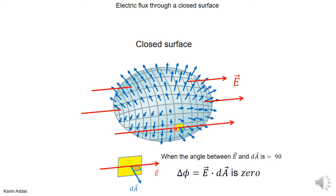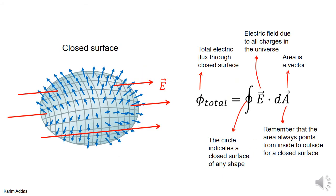If there's an element of area such that the electric field line just basically grazes the surface, then if you zoom in, the electric field and area vectors happen to be at 90 degrees to each other. In that case, the electric flux through this element of area is zero — the dot product is zero.